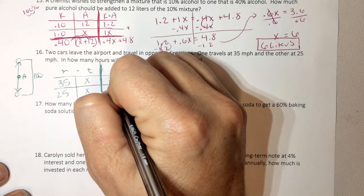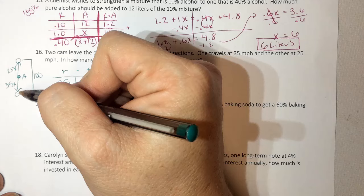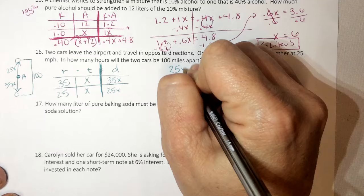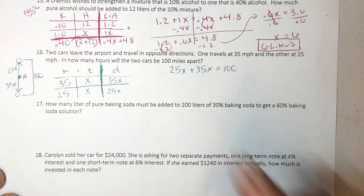So my distance for this car is represented by 35x. My distance for this car is represented by 25x. And so I know that the distance of this car plus the distance of this car, because they both started at the airport, should equal 100. So 25x plus 35 equals 100. Or you could say 35x plus 25x. It's going to be the same thing. So 25 plus 35 is 60. Divide both sides by 60.